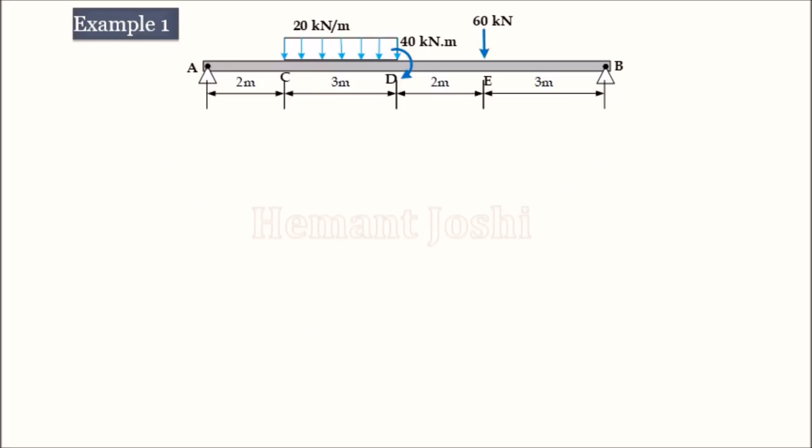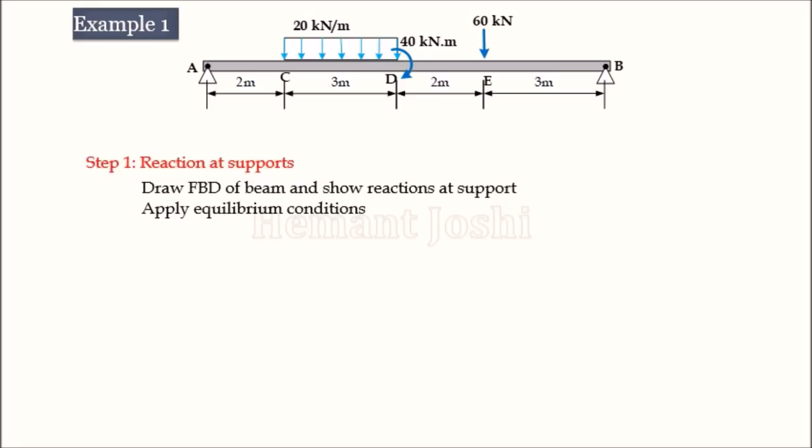Here is the first problem. Beam AB is supported at A and B, carries a UDL of 20 kN/m, one couple acting at D, and one point load acting at E. Let us move to step 1 — finding the support reactions. The beam with reactions RA and RB is shown, and we apply equilibrium conditions.